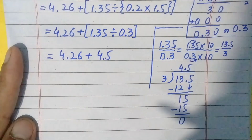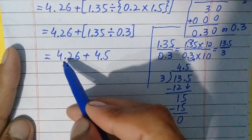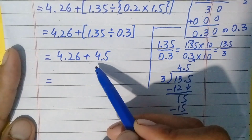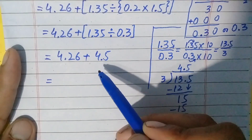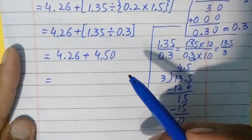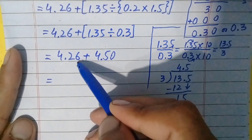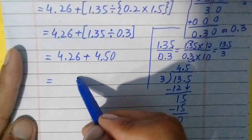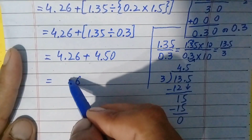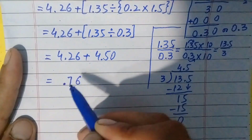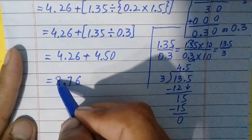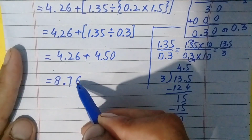Now only one operation is left: addition. We will add these two numbers. These are unlike decimal fractions, so we make them like fractions by adding a 0. Now we add corresponding digits: 6 plus 0 is 6, 5 plus 2 is 7, we put the point here, and 4 plus 4 gives 8. So 8.76 is the answer to this question.